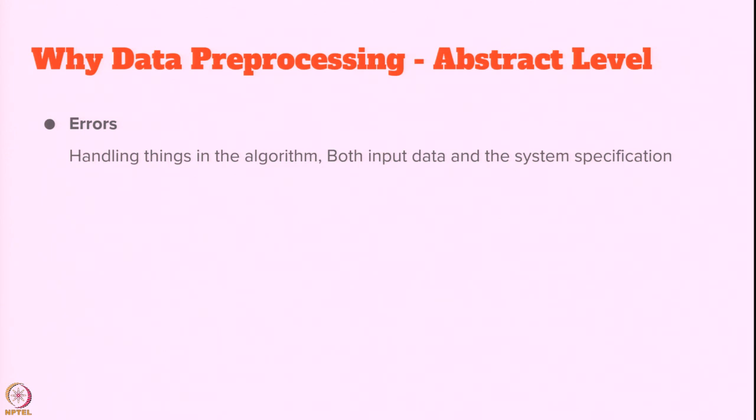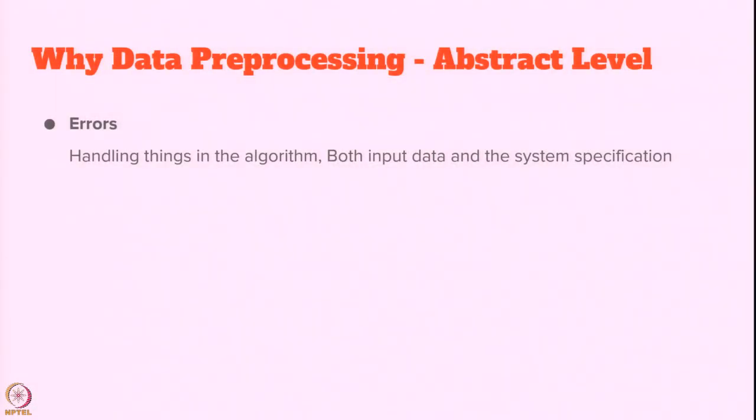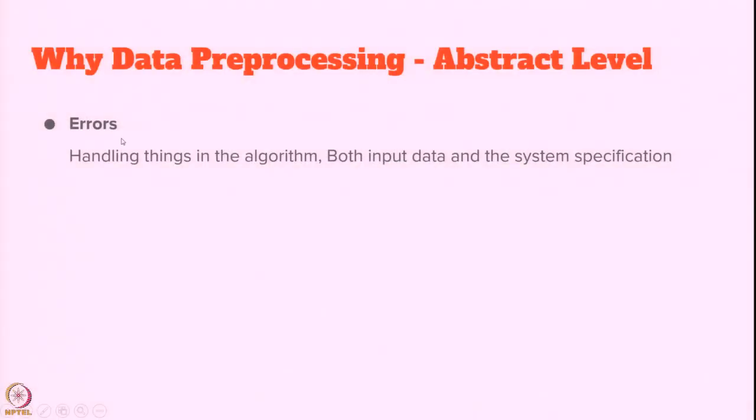Apart from making data useful, efficient, and effective, what are the other challenges that make us use data pre-processing? One more dominant reason we require data pre-processing is errors. When we collect the raw data, there are chances that the data may not be complete. In those cases, we also have to use data pre-processing. An error could mean you are not storing the data — for example, a missing value is a simple example of an error. You are collecting data and some information is missing.